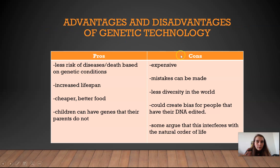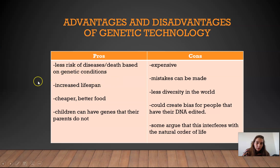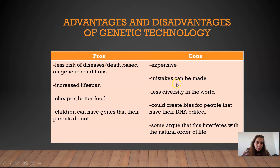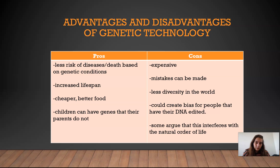I want to present some advantages and disadvantages — pros and cons — of genetic technology. The pros are that if you are editing DNA, there's less risk of diseases and death based on genetic conditions. If you can take out genes that might cause illness or death, you're putting people at less risk. It also increases lifespan for people and animals. Genetic technology like selective breeding gives us cheaper, better food, which is good for our growing human population. Another pro is that children can have genes their parents don't — genetic technology could give kids traits that weren't in the parents' DNA. On the con side, it is expensive and not easy — not everyone can afford to change their own or their children's DNA. Mistakes can happen since scientists are performing these procedures.